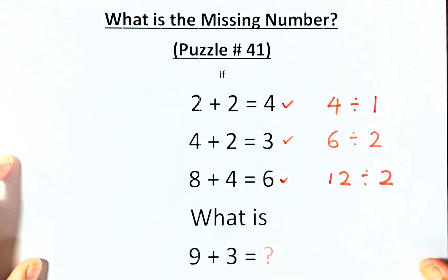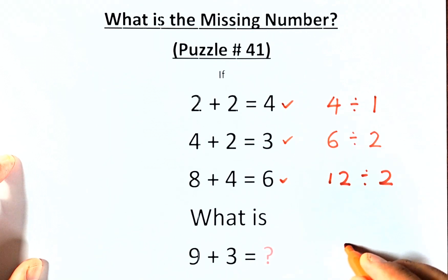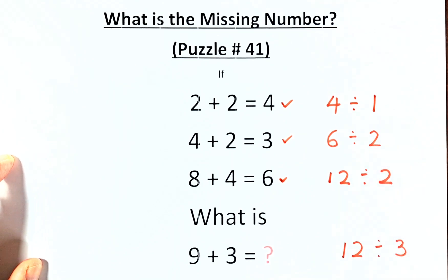So now, we have to come to the solution of 9 plus 3 equals to the question mark. So 9 plus 3 is 12. 9 divided by 3 is 3. And then we do the division. 12 divided by 3. And the question mark equals to 4.